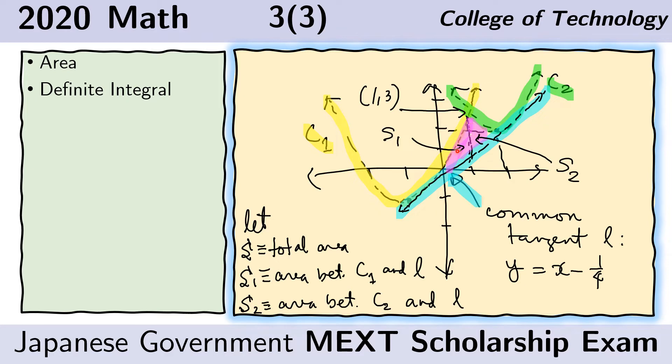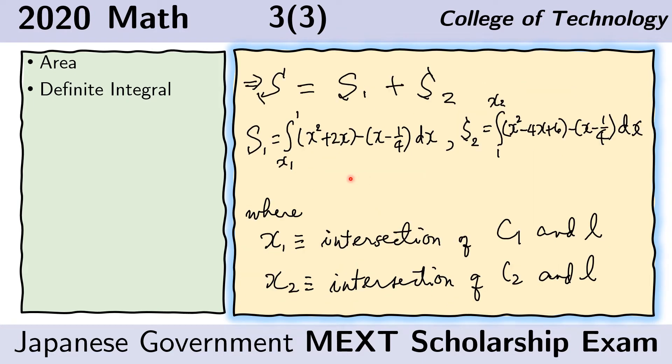Therefore, to find these areas, we need to find the integrals. For S1, we need to find the integral of the difference between the yellow curve and the blue curve. For S2, we need to find the integral of the difference between the green curve minus the blue curve. Here we write down what we said in the previous slide. S is the sum of S1 and S2. S1 is the integral from the intersection of the tangent line and C1 to the intersection of C1 and C2, which is x equals 1.